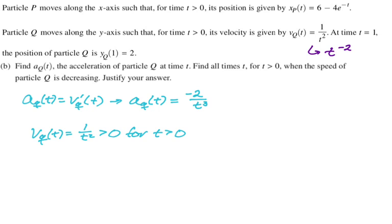So now I just need to figure out where acceleration is negative. But a_Q(t), we just found, was negative two over t cubed. And if t is positive, then negative two divided by positive is negative. So a_Q(t) is less than zero for all t greater than zero. So these things have opposite signs everywhere, which means the speed is always decreasing.